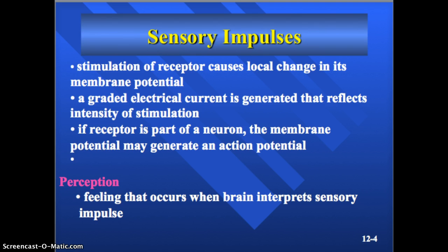Sensory receptors are either the ends of neurons or other kinds of cells near the ends of those neurons. So when we're talking about ends of neurons, we're talking about dendrites. It could either be the receptors found on the dendrite of neurons, or different cells near those dendrites so that they can transmit the signal quickly.